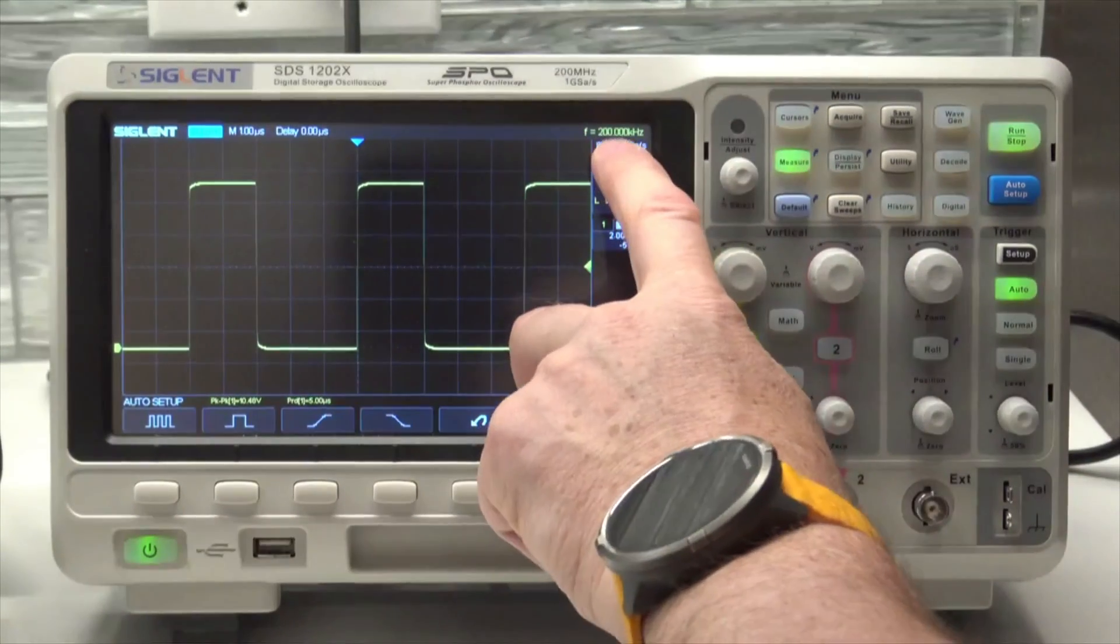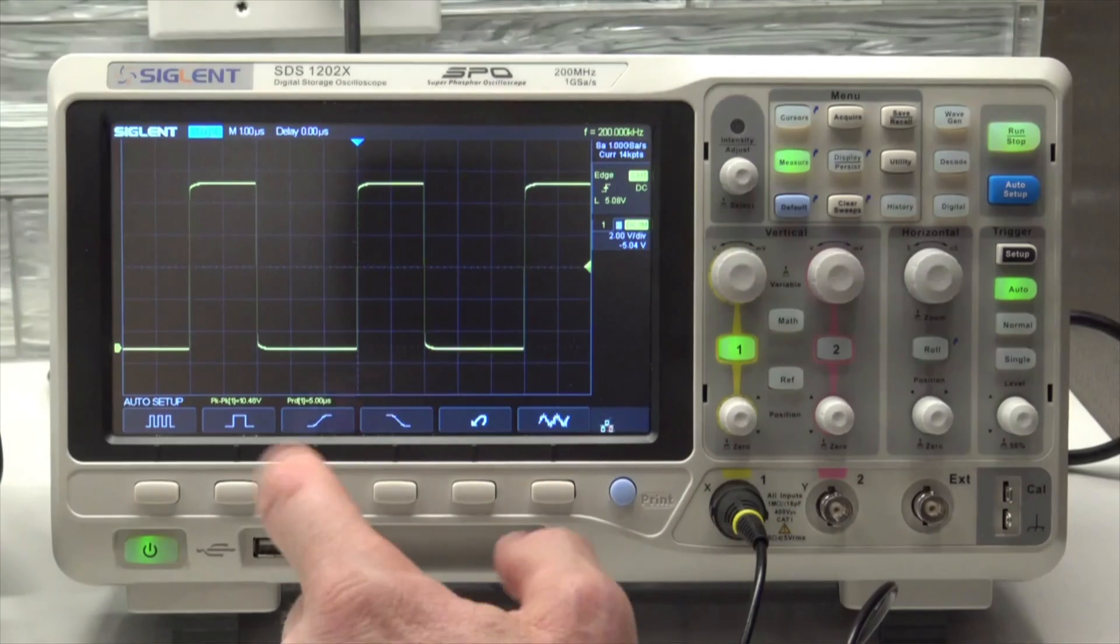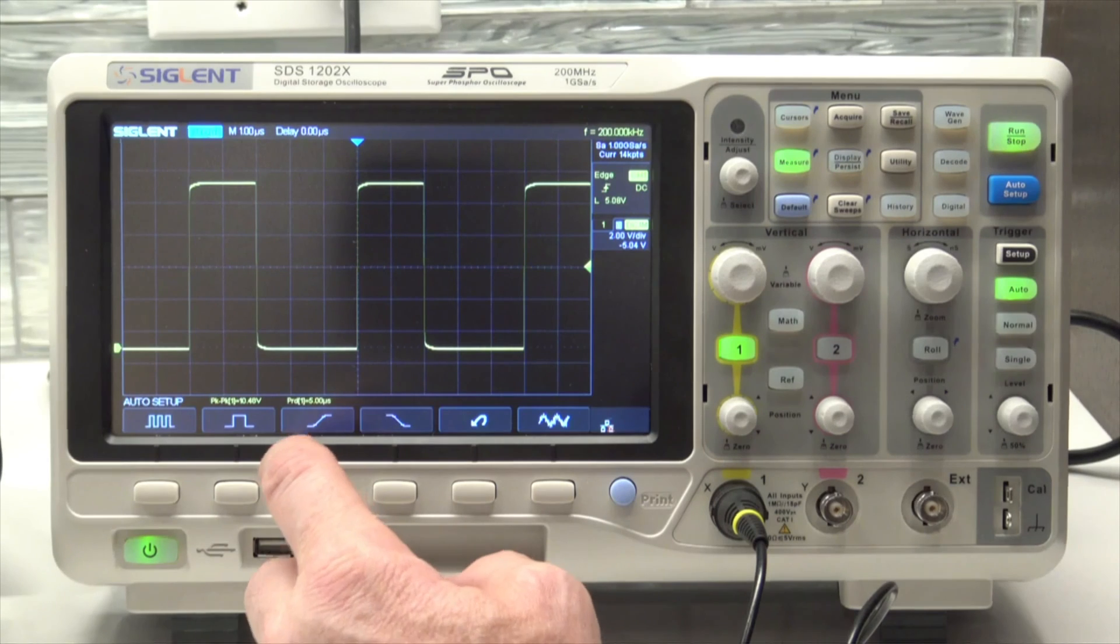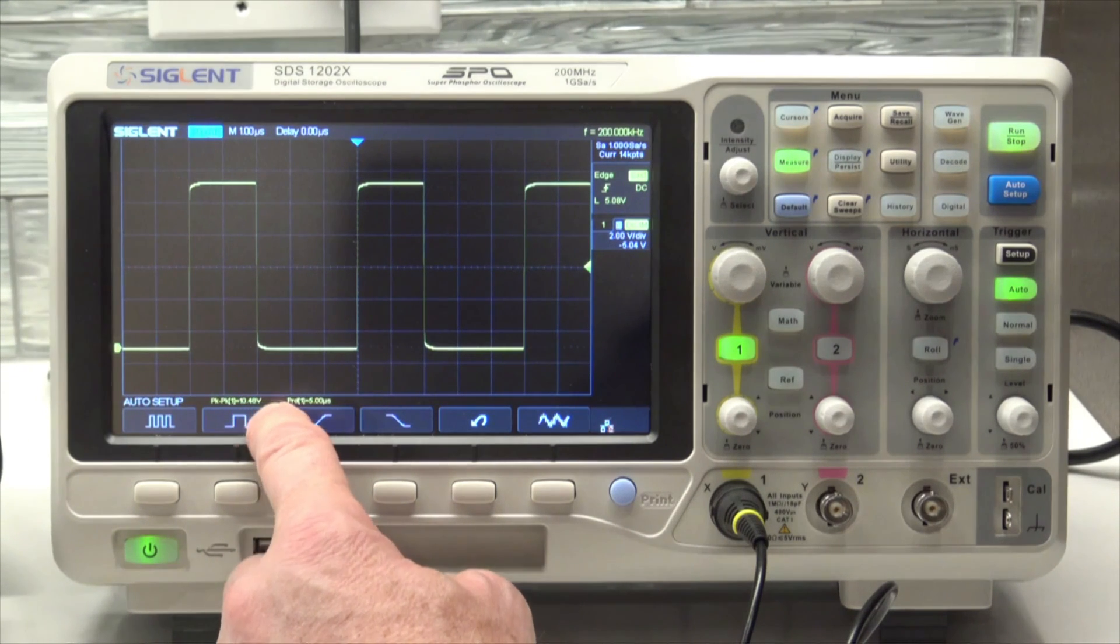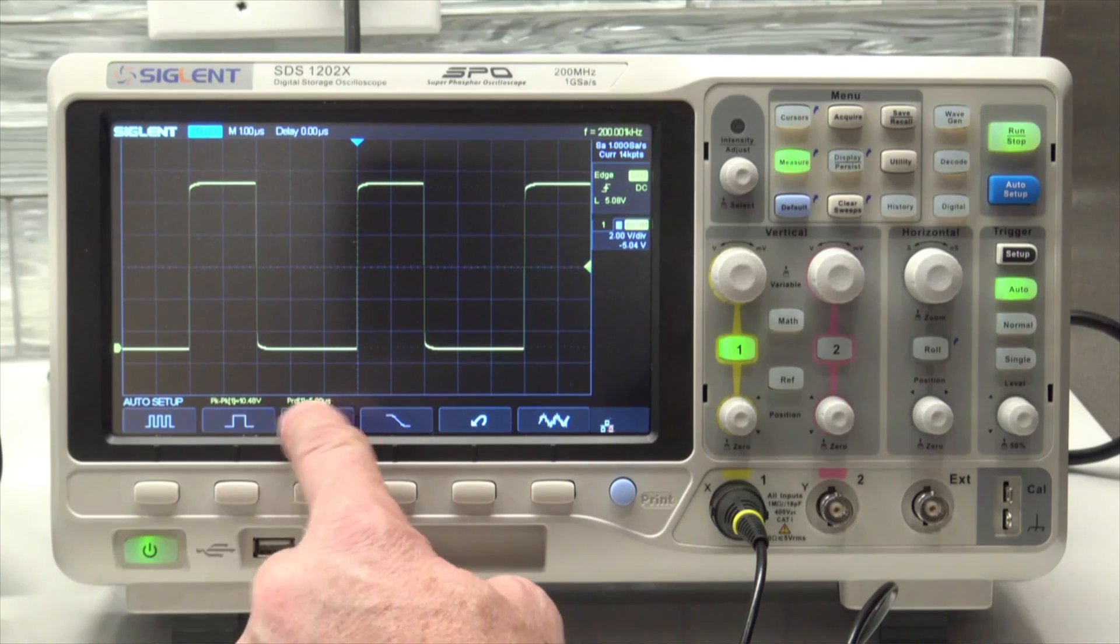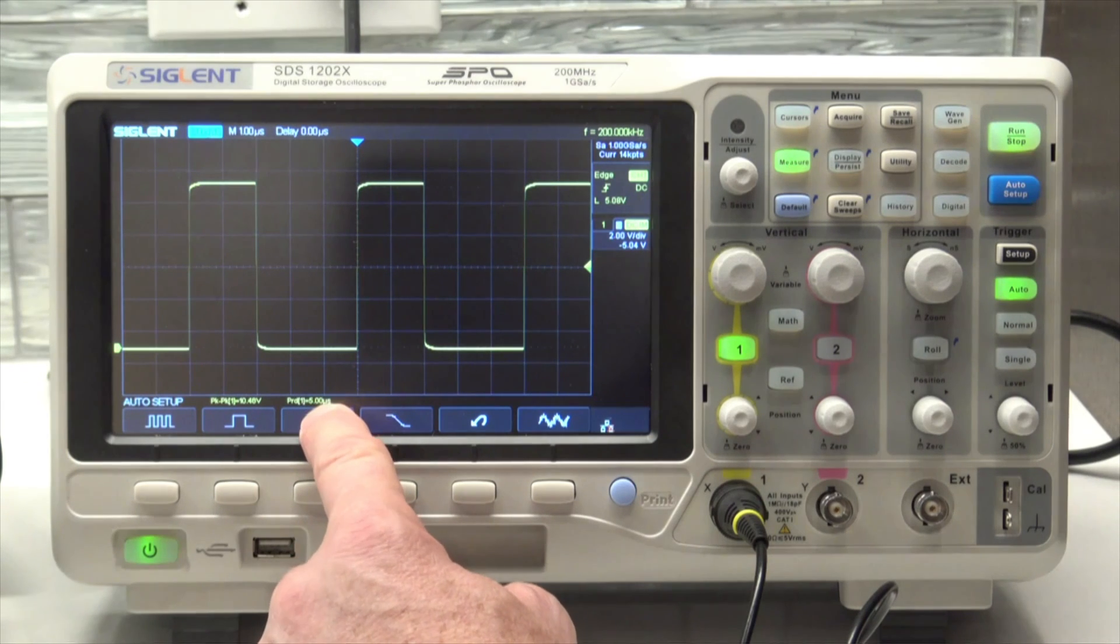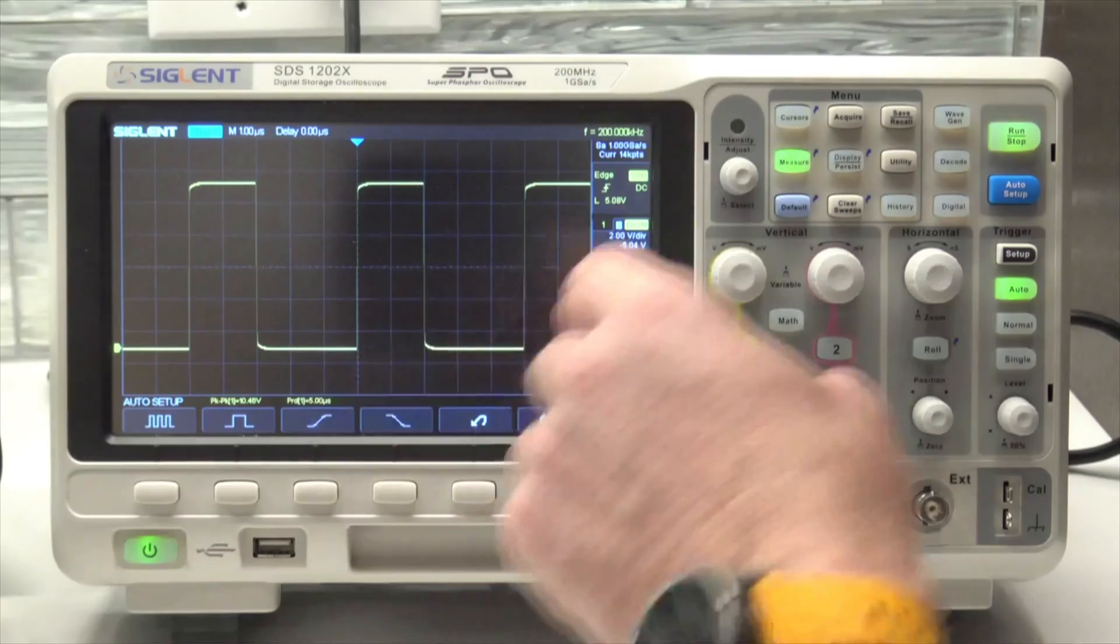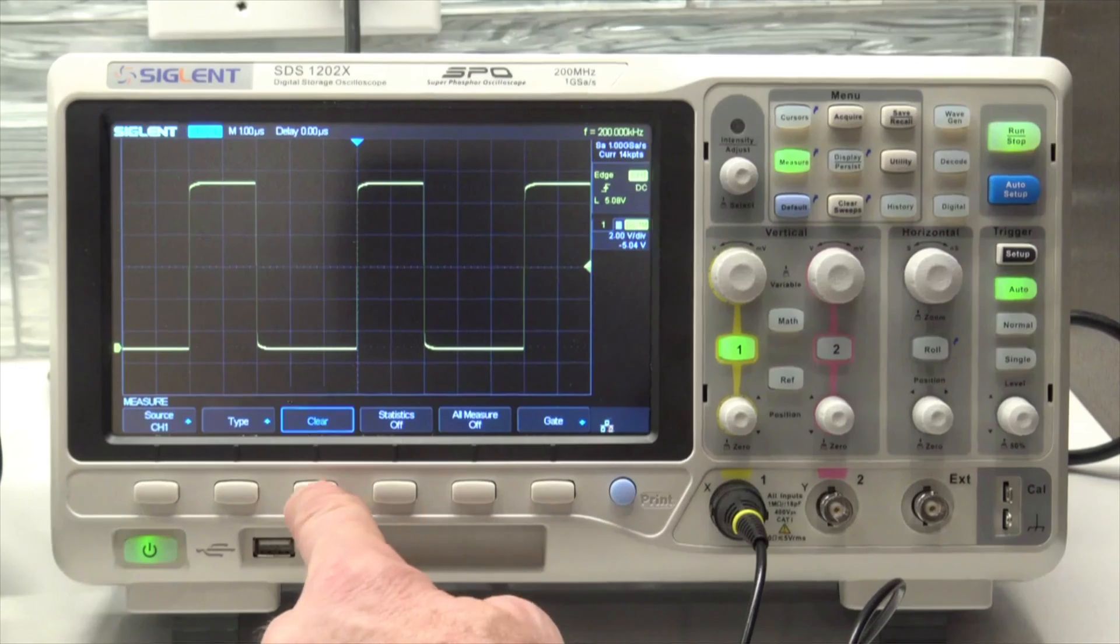It's saying the frequency is 200 kilohertz, which is typical of a power supply. Down here I'm seeing 10.48 volts peak to peak. Let's say I want to measure some things of my own, so I'm going to hit the measurement and say clear.